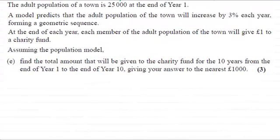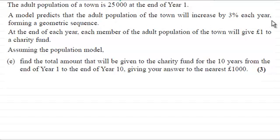Hi there. Now for the last part of this question, just to recap: we were given that the adult population of a town is 25,000 at the end of year one, and a model predicts that the adult population will increase by 3% each year, forming a geometric sequence. At the end of each year, each member of the adult population will give one pound to a charity fund.